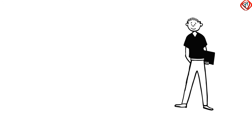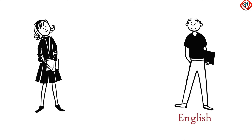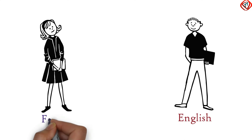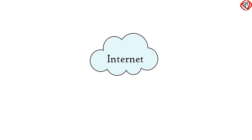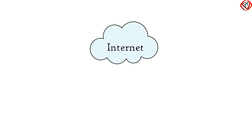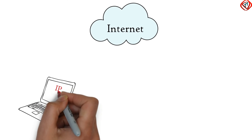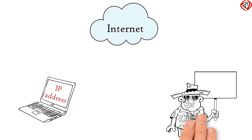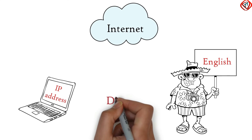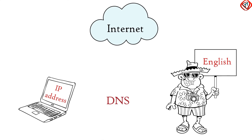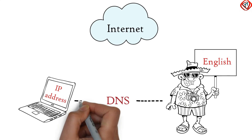Suppose we speak English and we want to communicate with a person who speaks French. For effective communication, we will need a translator. Same is the case on the internet too. Computers or web browsers understand IP addresses and we humans understand all languages, say English. DNS acts as a translator between humans and computers.